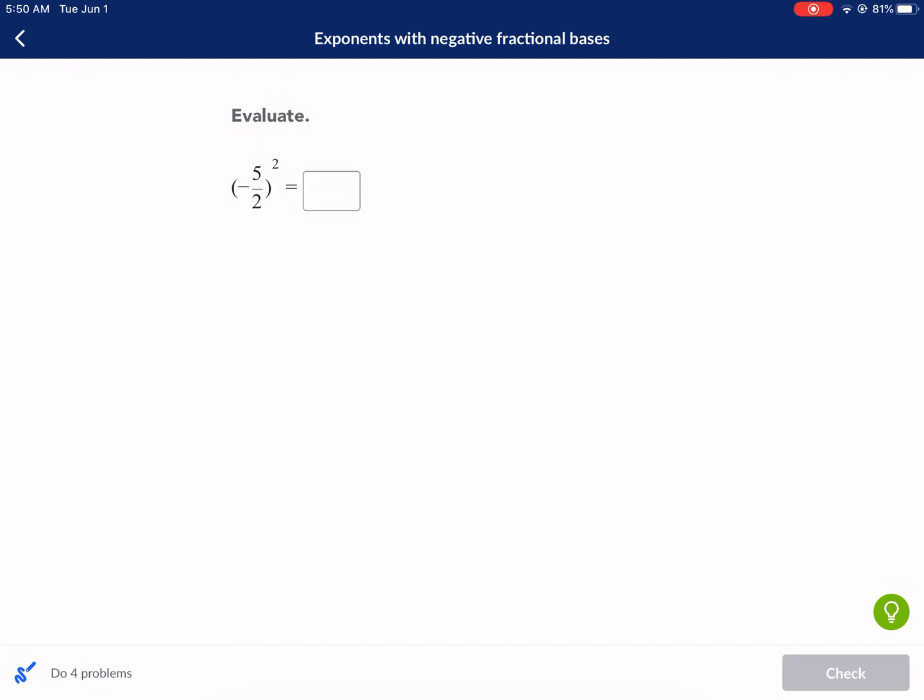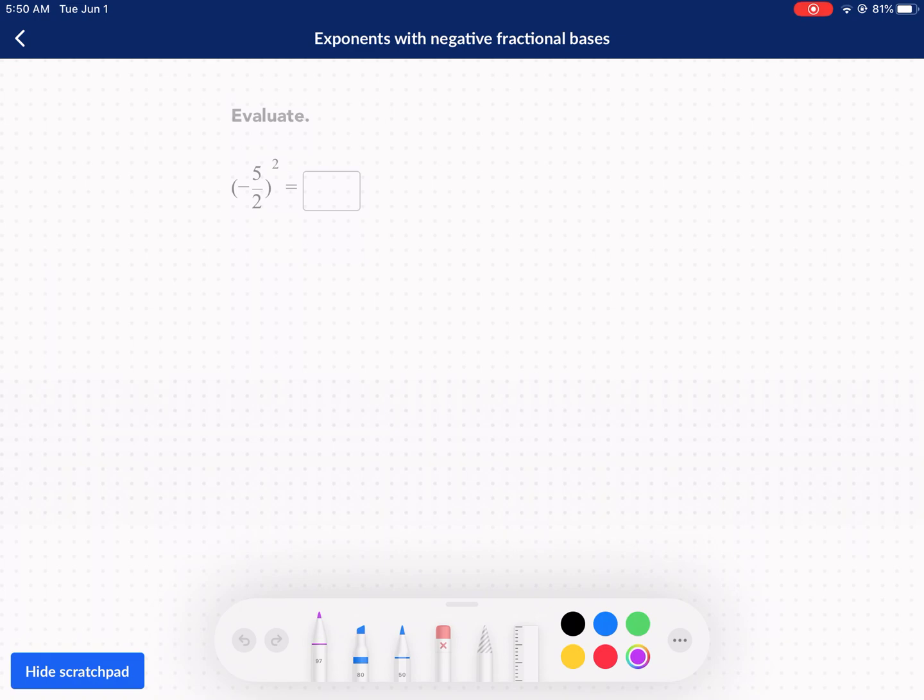The first problem says evaluate and it has negative 5 over 2 in parentheses and then to the power of 2. An important thing here that a lot of people forget about is we have these parentheses first. This is always like a problem on the SAT or ACT, or on most tests for power chapters, is that they'll try to confuse you by putting these parentheses here.